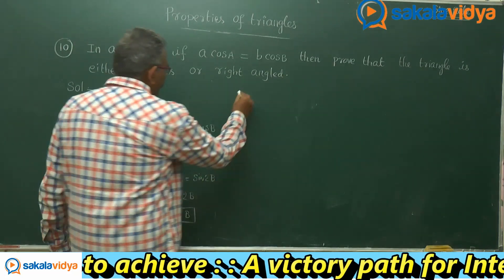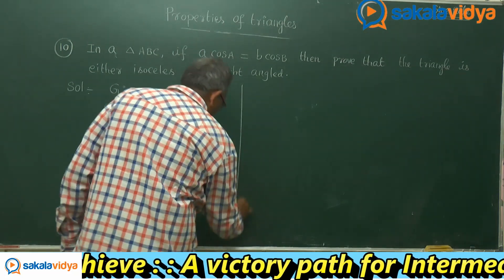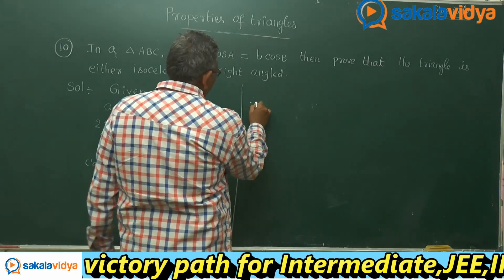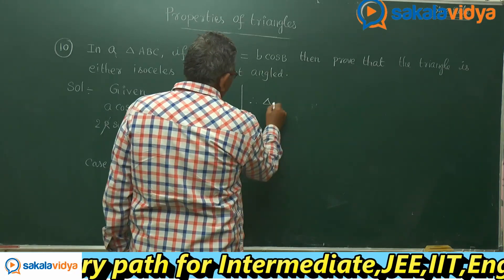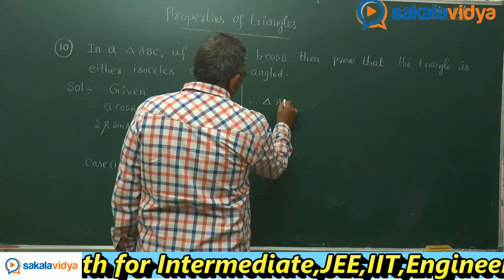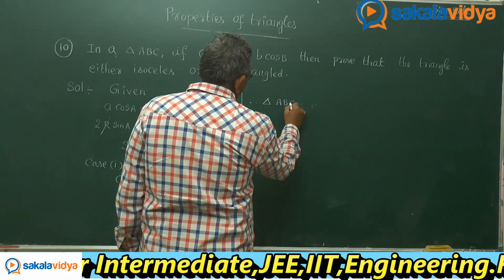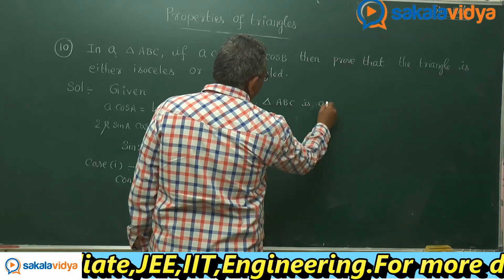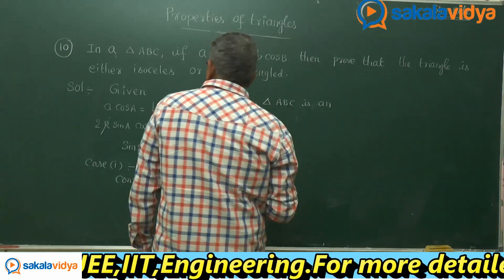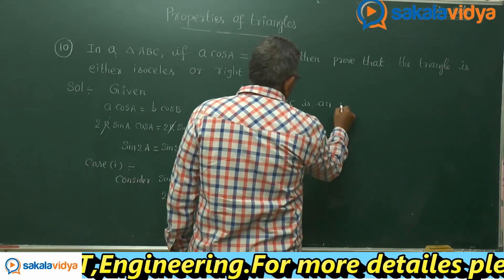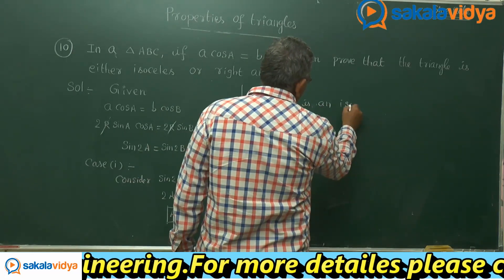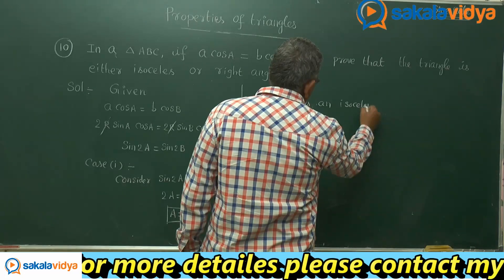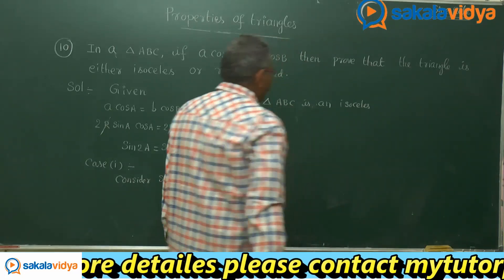If two angles are equal, then the triangle is said to be isosceles. From case 1, triangle ABC is an isosceles triangle.